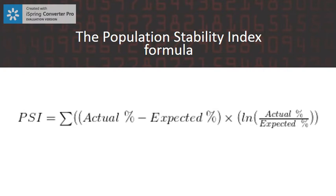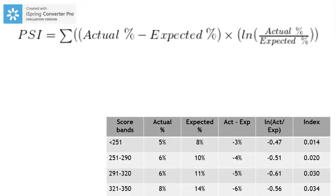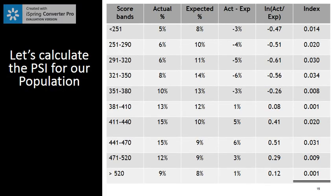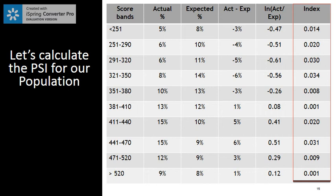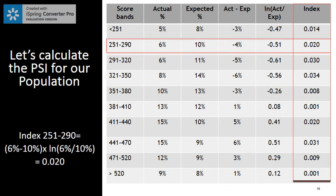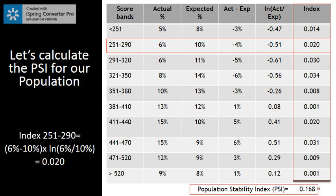The Population Stability Index formula is now displayed, where 'actual' is the recent population frequency and 'expected' is the development sample frequency. The results will always be positive; the precondition is positive values for all actual and expected inputs. On the table, you will see the score bands divided by bins, the actual percentage, expected percentage, the difference between actual and expected, the natural logarithm of actual divided by expected, and the result — which is the index value. Let us consider the score band 251 to 290 and calculate the index value: 6% minus 10%, times the natural logarithm of 6% divided by 10%, gives us an index value of 0.020. The final PSI value is 0.0168, which is the sum of all values in the last column.